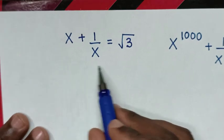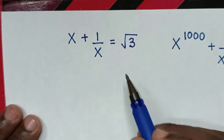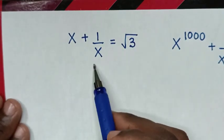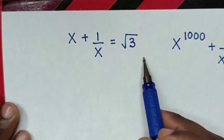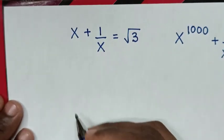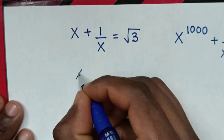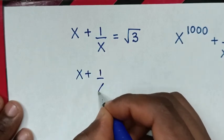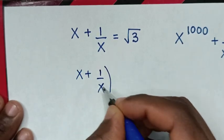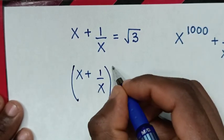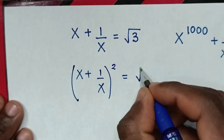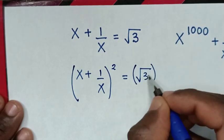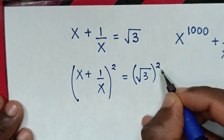So, from this original equation, to remove this square root, we'll square both sides. So it will be: (x plus 1 over x) squared is equal to (square root of 3) squared.